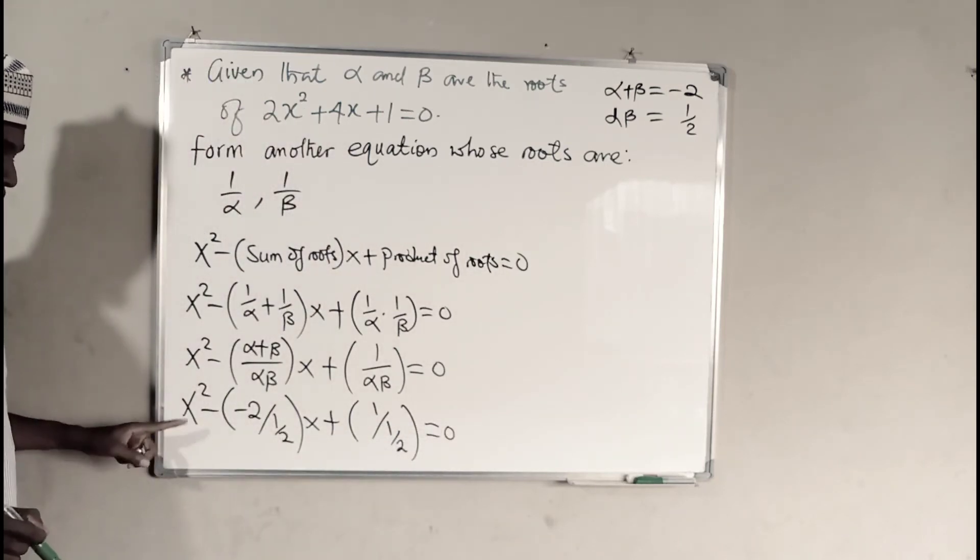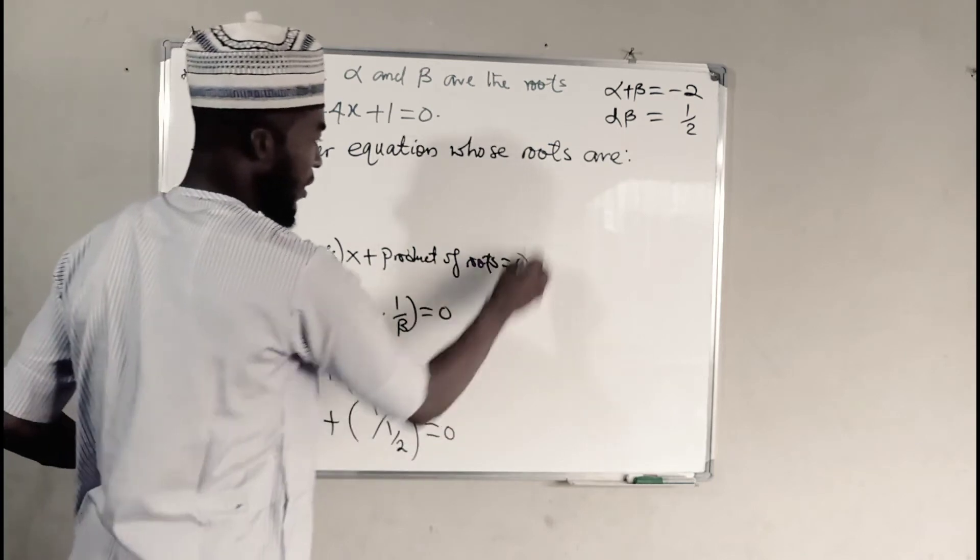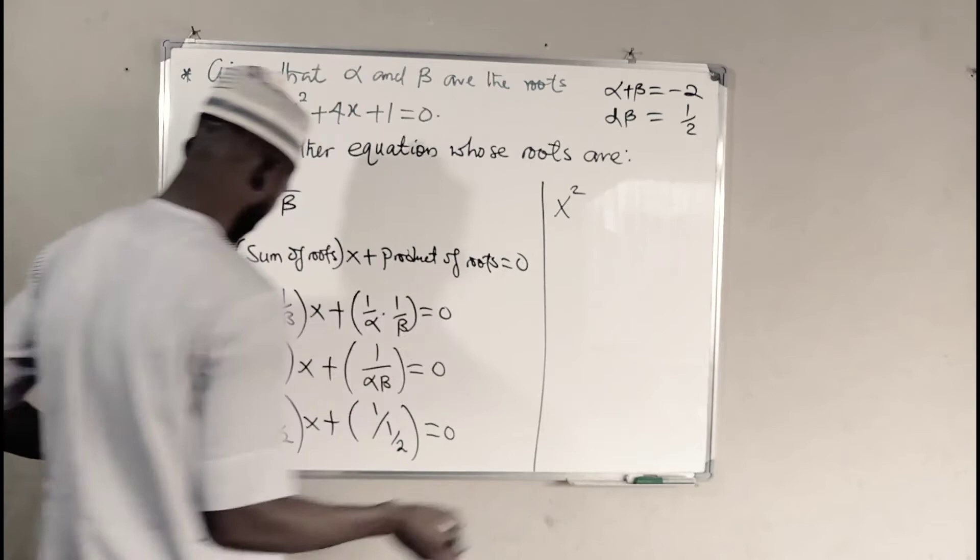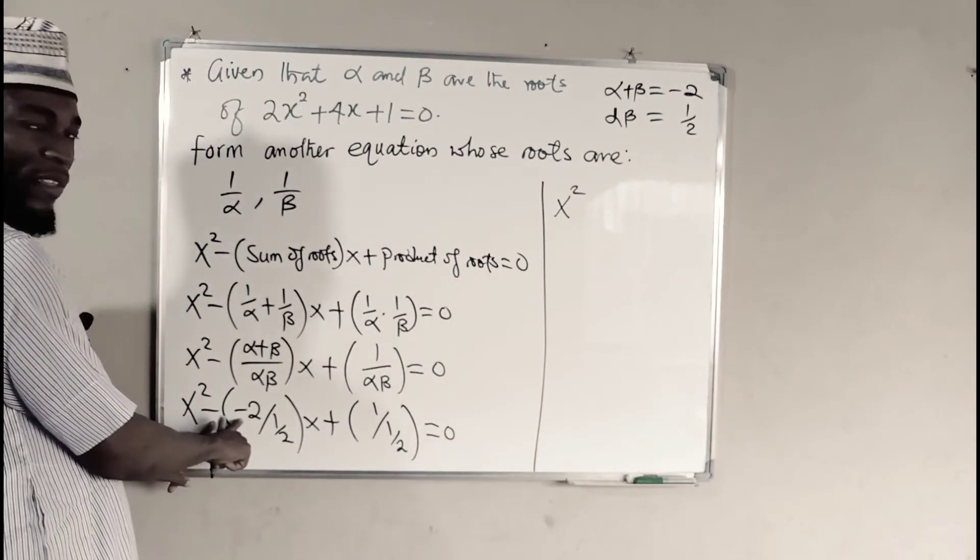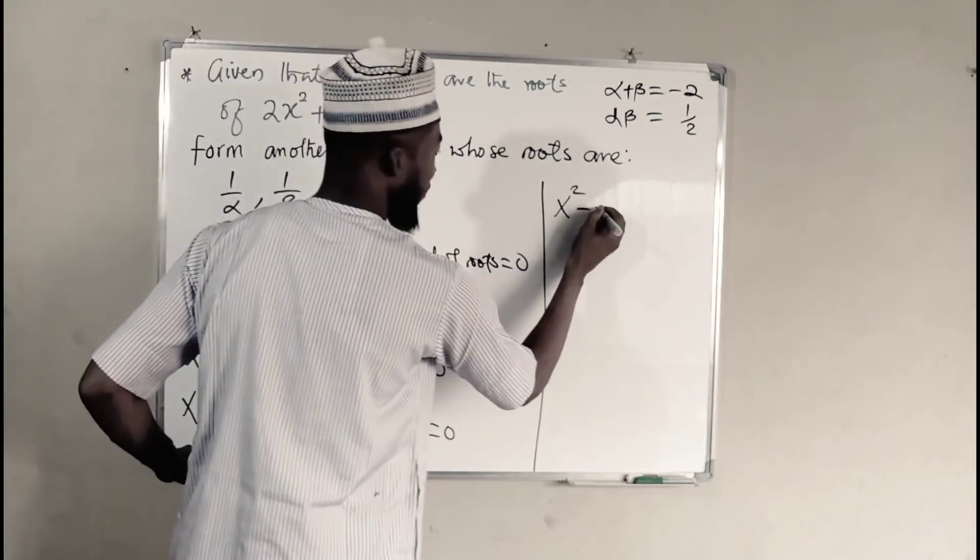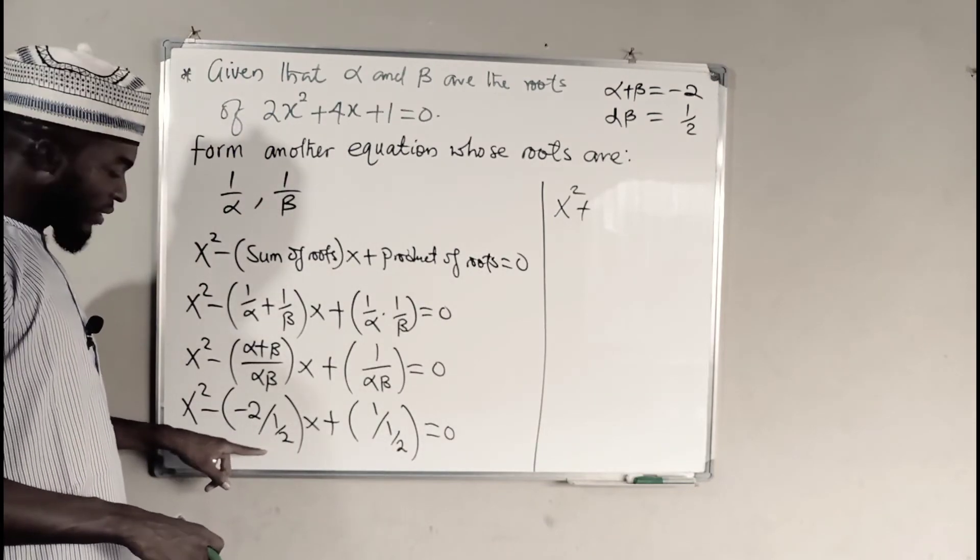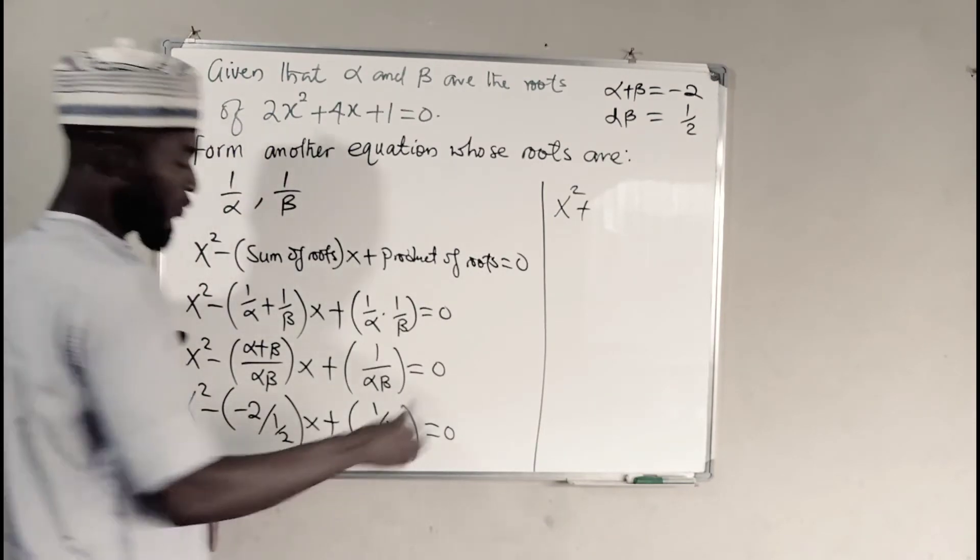Now let's simplify. You can see we have x squared minus. And this minus will transform into positive sign. Negative 2 divided by 1 over 2 is the same thing as saying negative 2 times 2 is negative 4. So we have 4.